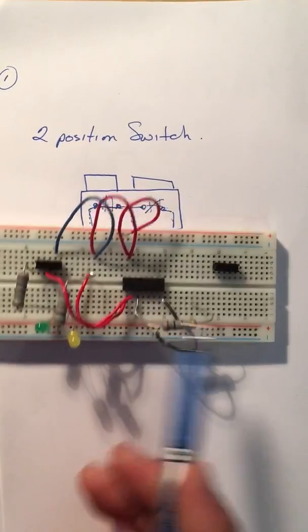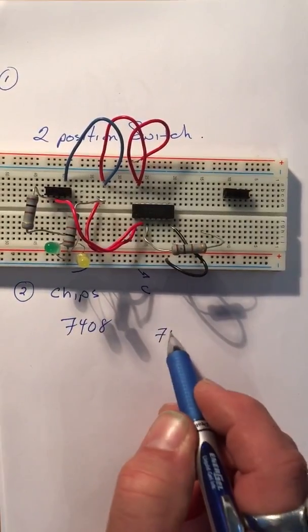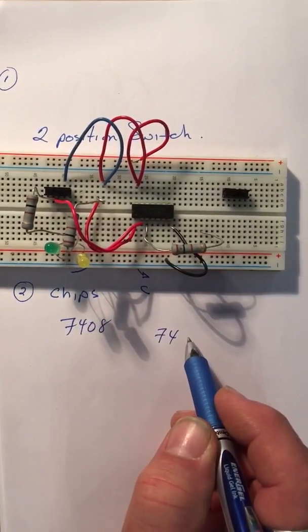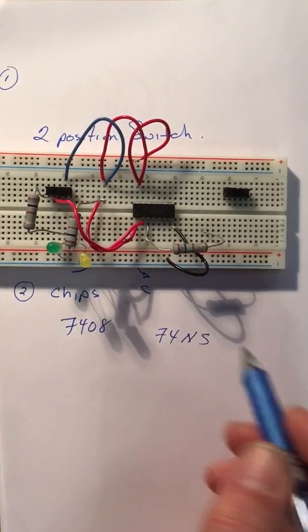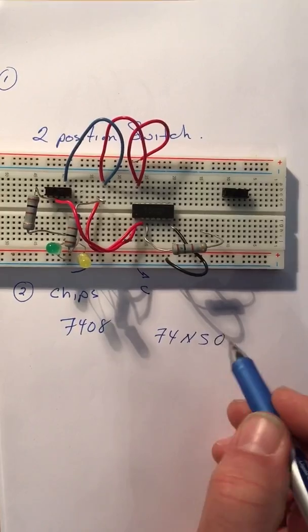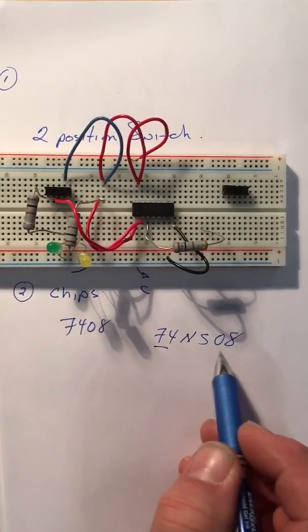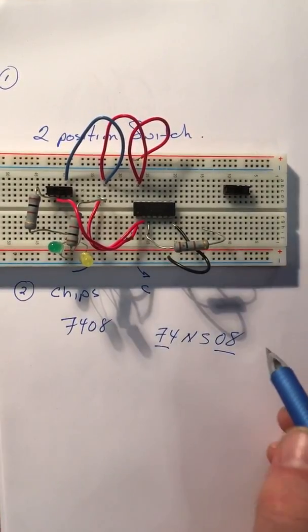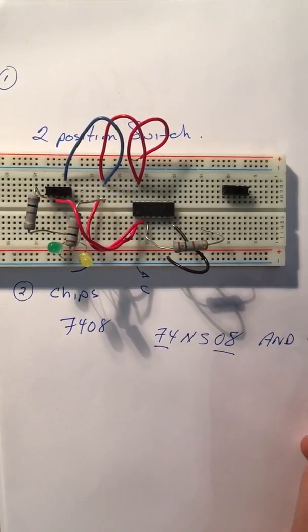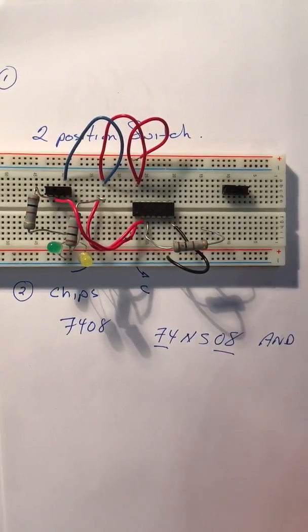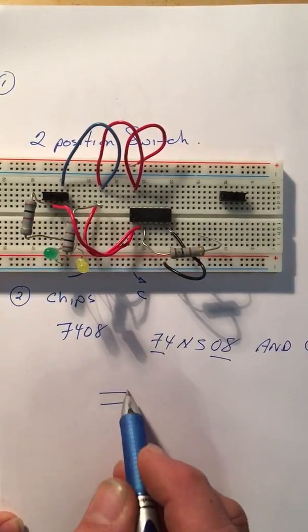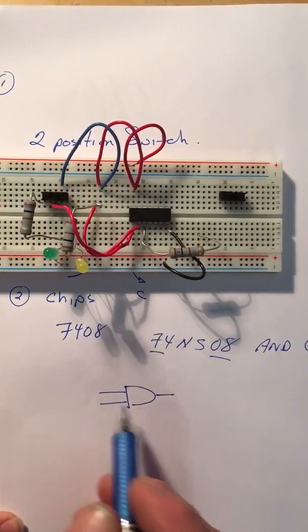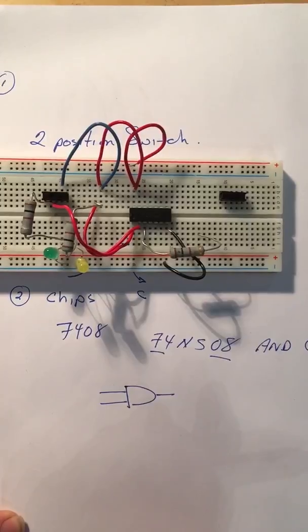The 7408, and you can tell that it's the 7408 because there's writing on the top. I think it says I can't really see a 74 and I may see like NS or NA or something like that and then it says 08. Really what you're looking at, 7408, and that would be an AND gate.